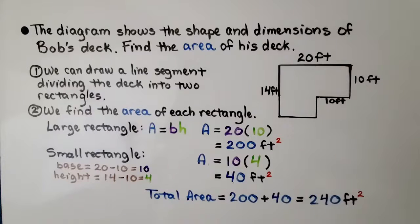The diagram shows the shape and dimensions of Bob's deck. Find the area of his deck. So, we see that it's a composite figure. We can draw a line to divide it. We draw a line segment, dividing the deck into two rectangles. And we find the area of each rectangle.